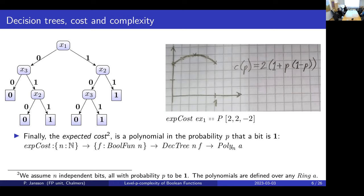You can compute the expected cost efficiently as a catamorphism — a fold over the tree. For this particular tree, the expected cost is two at the ends. If the likelihood of a one is certainty, you only need two questions — that's the rightmost path. Similarly on the leftmost path, the cost is also two. But in the middle, if the probability is 50-50, the cost is the average of the longest and shortest path, which is two and a half.